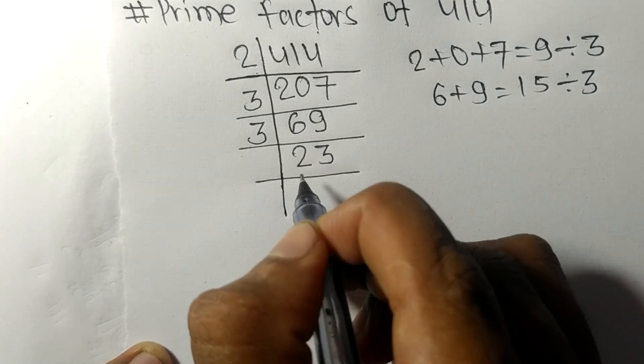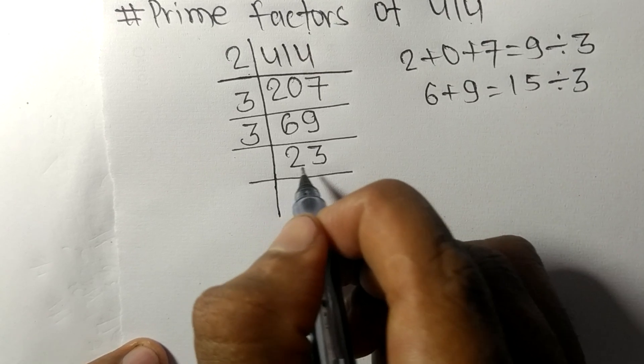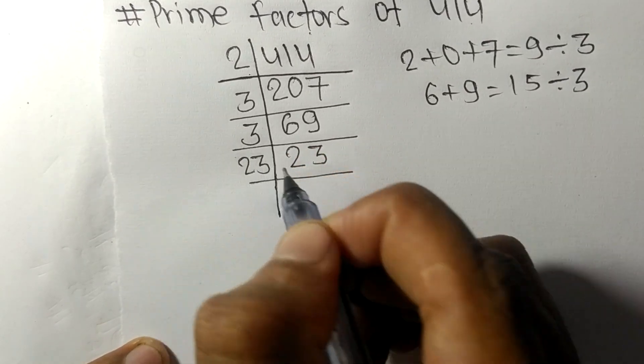Now we have 23, which is a prime number, so it's divisible by 23 itself, and we get 1.